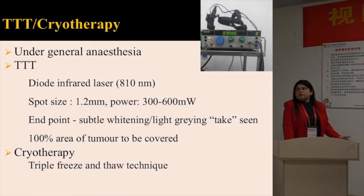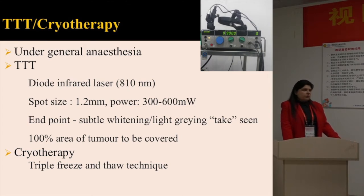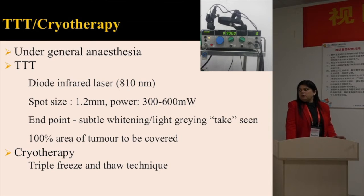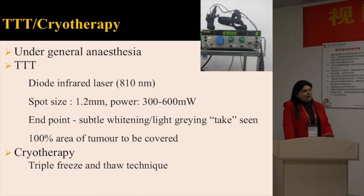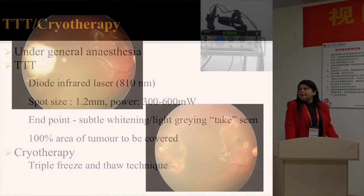Focal consolidation is performed under general anesthesia. For TTT we use an 810 nm diode infrared laser with a large spot size of 1.2 mm. The power starts from the lowest and can go up to 600 to 650 milliwatts. We have to cover the entire tumor and make sure a reaction is seen. For cryotherapy we use the triple-freeze-thaw technique.